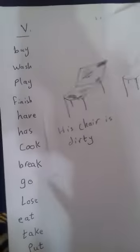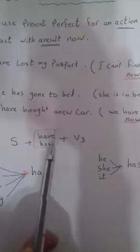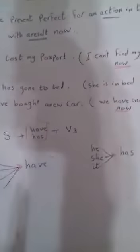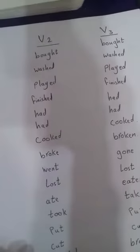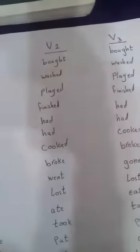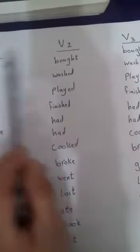Now, when we talk about verb three here in this rule, subject plus have or has plus verb three, this is verb three. We mean this verb, this side. We have verb one, two, three.